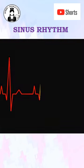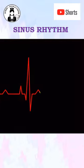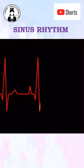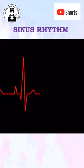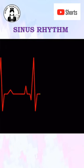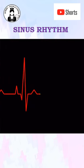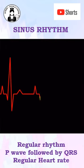The normal intervals of sinus rhythm are: PR interval is 0.12–0.20 seconds, QRS width is 0.08–0.12 seconds, and QT interval is 0.35–0.43 seconds. Thank you for watching.